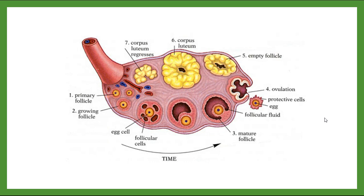If we look at the ovary, we can see the ova developing as a primary follicle in diagram number one. These will continue to grow and mature until we have a larger mature follicle. Eventually, the egg cell will be released during ovulation at point number four, where it will be released into the oviduct where potentially fertilization can take place. What's left behind in the ovary is now an empty follicle. The follicle will remain for a short period of time as a structure known as the corpus luteum, which will eventually degrade if fertilization does not take place and the menstrual cycle begins once more.